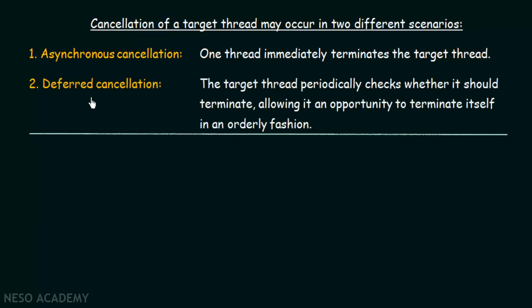The other scenario is deferred cancellation. In deferred cancellation, the target thread periodically checks whether it should terminate itself in an orderly fashion. Unlike asynchronous cancellation, nobody can just come and terminate it immediately without its permission. The target thread will periodically check whether it should terminate, allowing it an opportunity to cancel itself in an orderly fashion after making sure it can be cancelled safely.